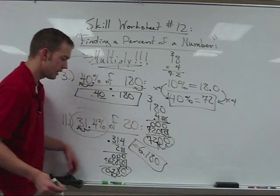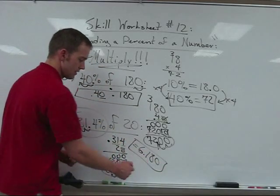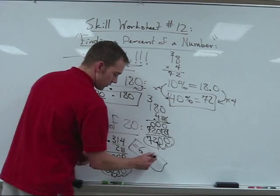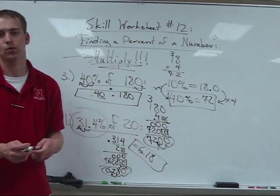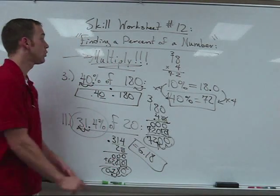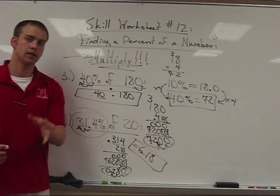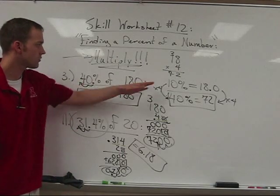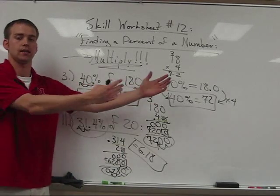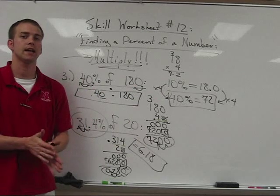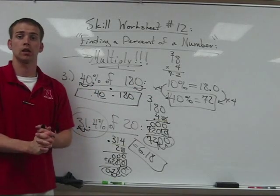So we notice that 31.4% of 20 actually turns out to be 6.280 equals 6.28. And of course, if you're like me, the zero drives you nuts. You don't necessarily have to have it there. But if you don't cross it off, I can't tell you you're wrong. Remember, you need to multiply to find these percentages if you want to make your life a whole lot easier. And of course, if it's an easy situation, finding 10% of the number by scooching that decimal once to the left is a nice tactic to use. Good luck!